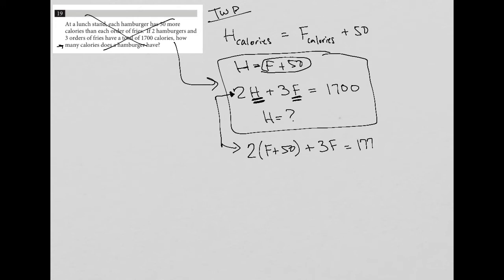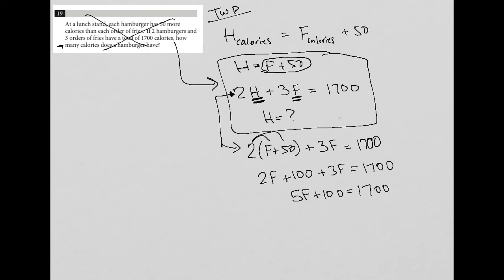I distribute the 2 across, so I get 2F plus 100 plus 3F equals 1,700. I combine like terms on the left-hand side, so I get 5F plus 100 equals 1,700. Subtract 100 from both sides, which gives me 5F equals 1,600. Divide both sides by 5, and I have F. This is not the calculator section, so I could do this in my head, but I prefer not to.